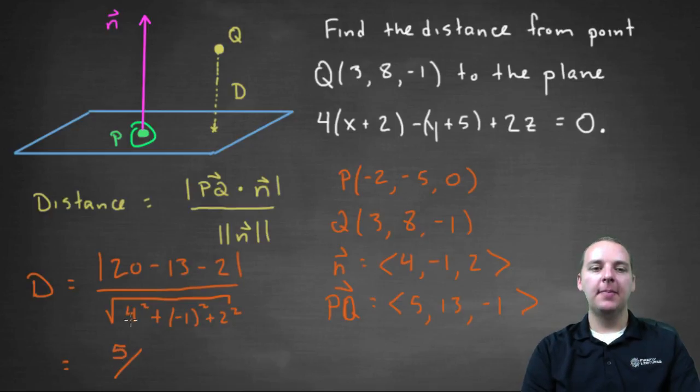Let's see, 4² is 16, (-1)² is 1, 2² is 4. So 16 and 1 makes 17, plus 4 makes 21, so I'll have 5 over the square root of 21.